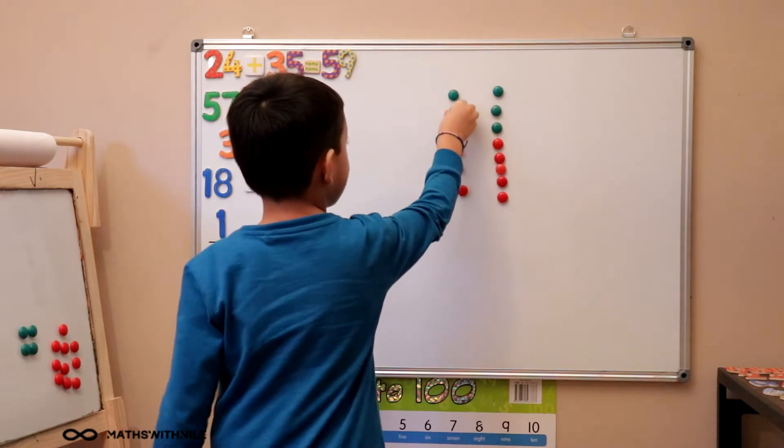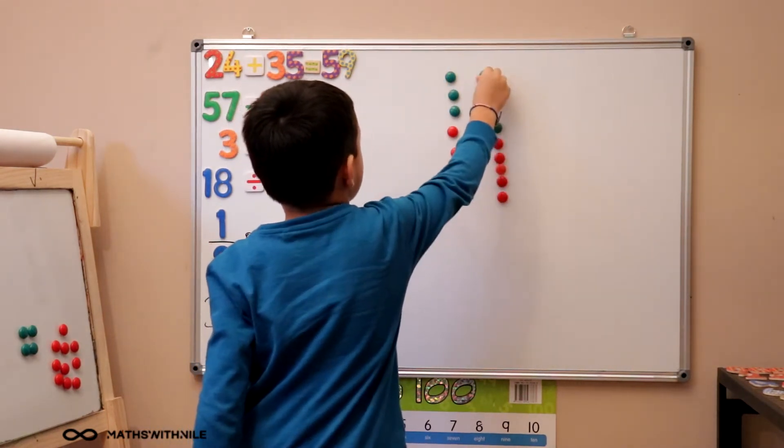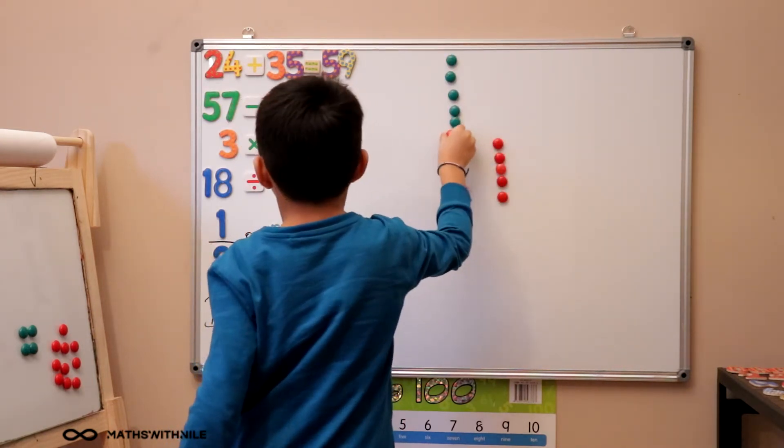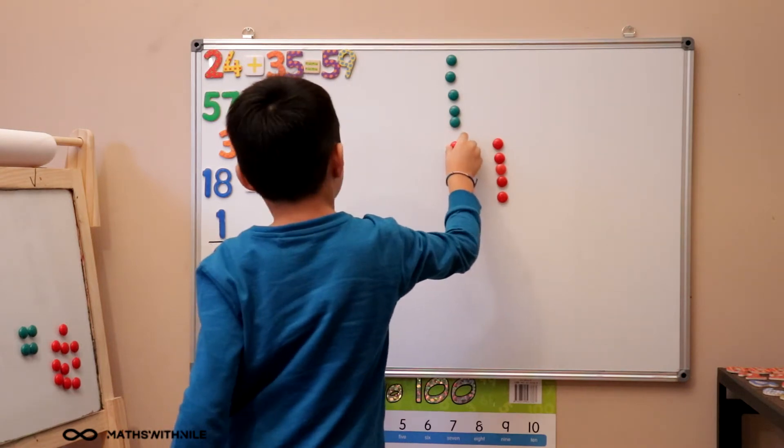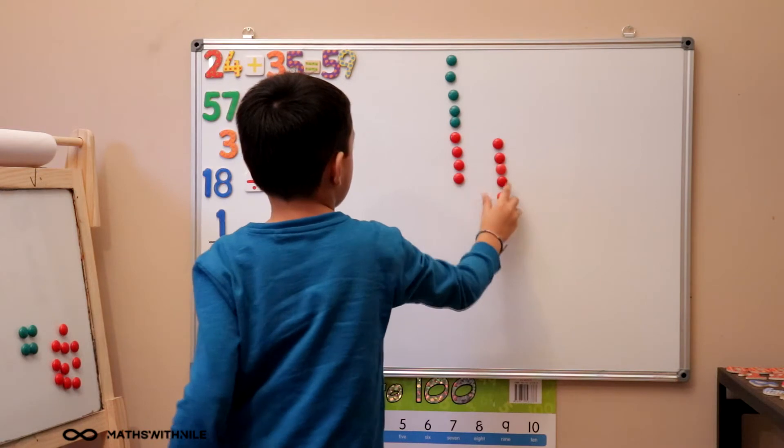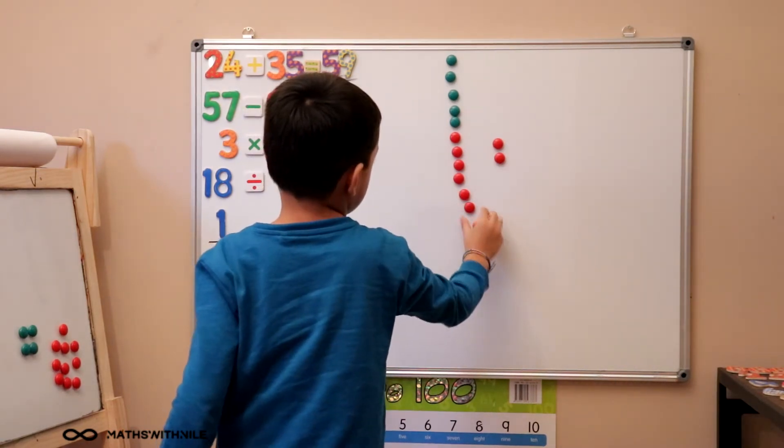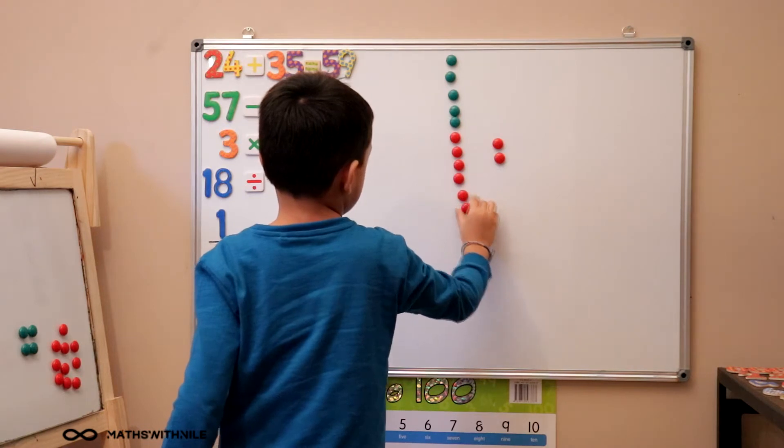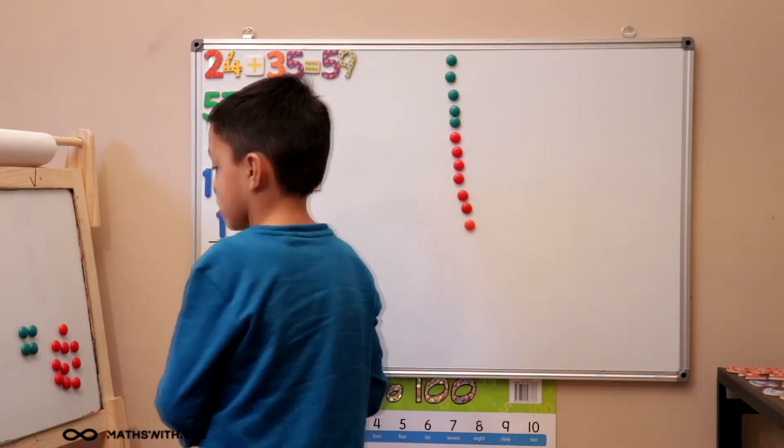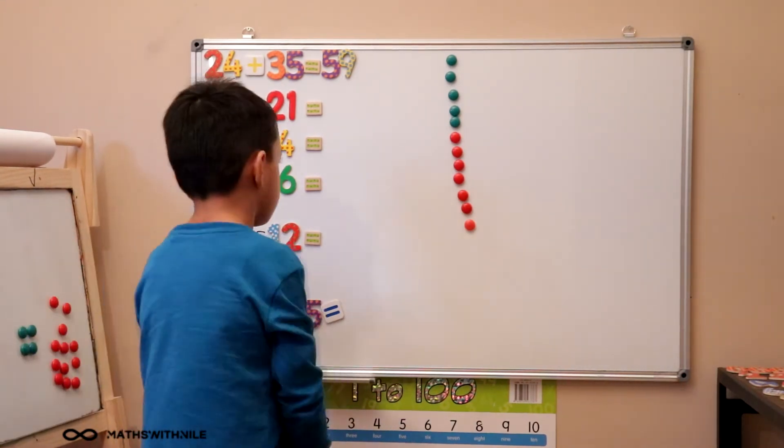10, 20, 40, 10, 20, 30, 40, 50. 1, 2, 3, 4, 5, 6, 7. Okay. Remove the other two that we don't need. Put them back on the board quickly. So we've got 57 there.